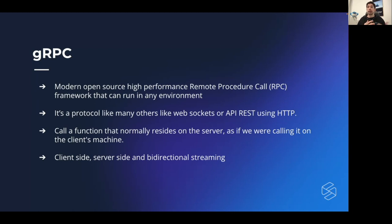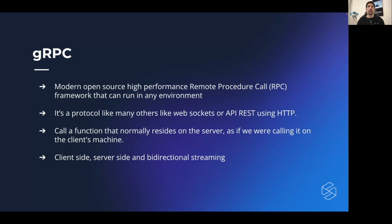With HTTP you have different calls — GET, POST, PUT, DELETE — and information is parsed as JSON. With RPC you just call the function as if you're calling it locally. One of the main advantages of gRPC compared to HTTP is that we can do client-side, server-side, and bi-directional streaming. We're not only calling a function and getting a response — we can also send or receive messages in a stream, unleashing a lot of really cool use cases.